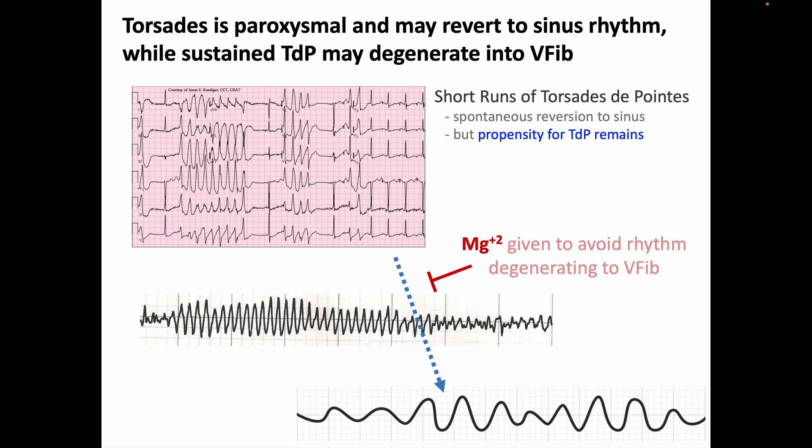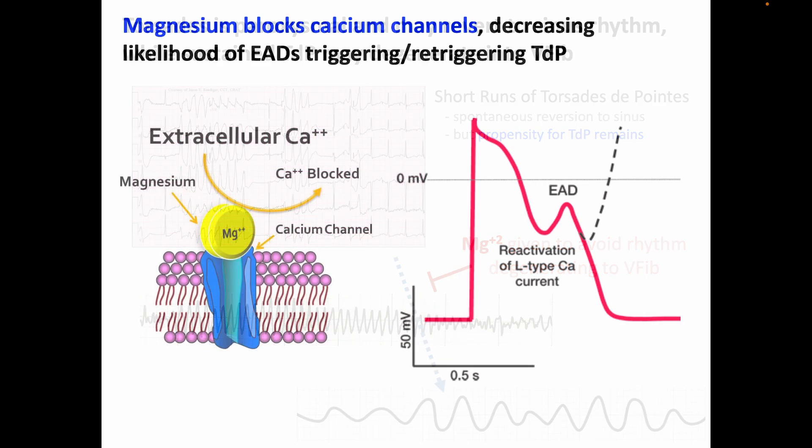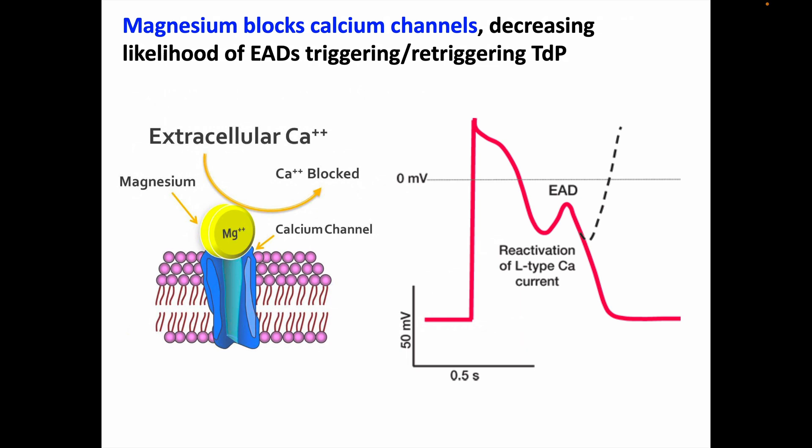Magnesium is given to reduce the propensity for triggering or re-triggering torsade, and to avoid degeneration to V-fib. When a patient has a fast rhythm with hemodynamic instability from torsade, electrical cardioversion is the treatment. But magnesium is indicated for short intermittent runs of torsade, when the patient is hemodynamically stable, or after cardioversion. Magnesium works by blocking calcium channels — specifically it is calcium current through L-type calcium channels that is responsible for the early-after depolarizations that trigger torsade. Blocking early-after depolarizations prevents torsade, though this does not correct the underlying QT prolongation; it only reduces the likelihood of that complication.